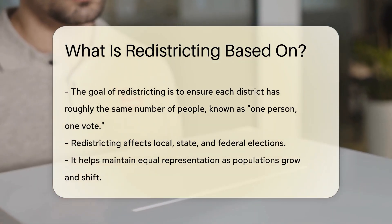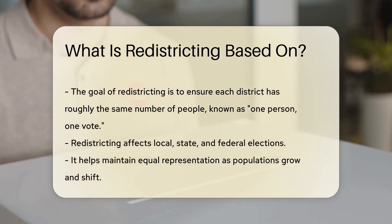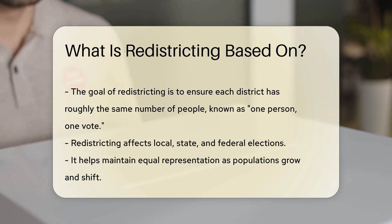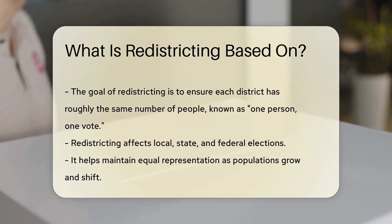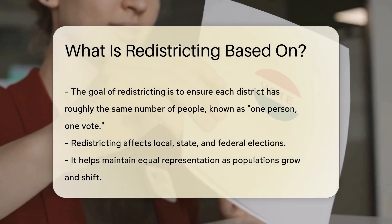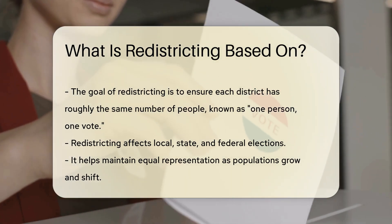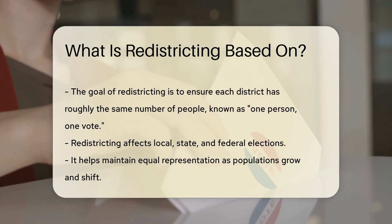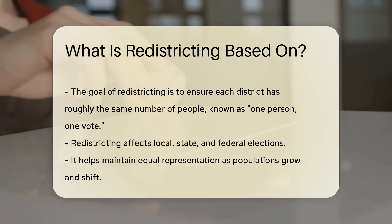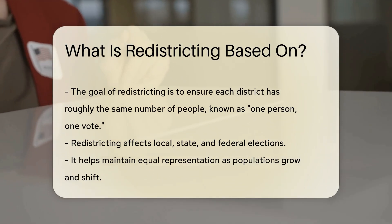This principle is known as one person, one vote. Redistricting can affect local, state, and federal elections. It helps maintain equal representation as populations grow and shift.